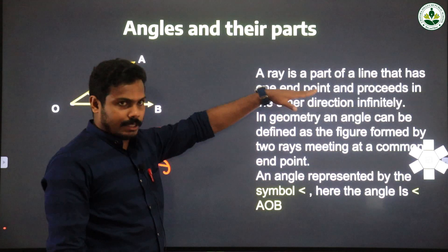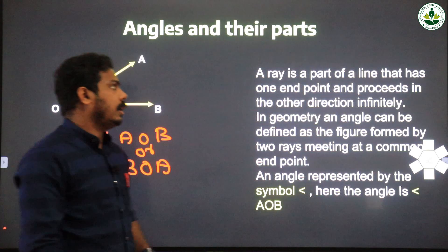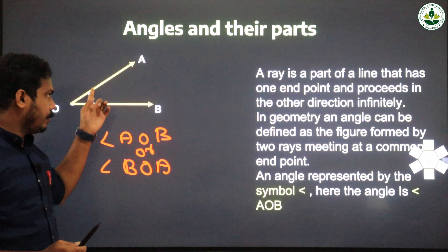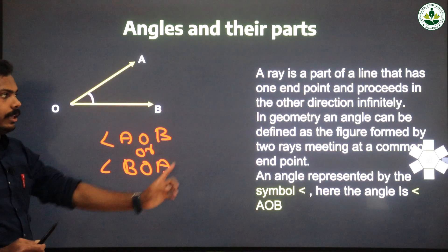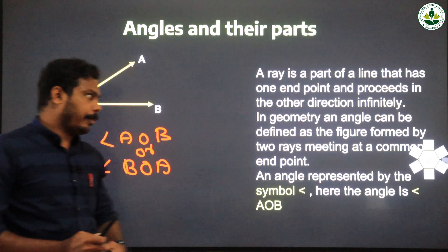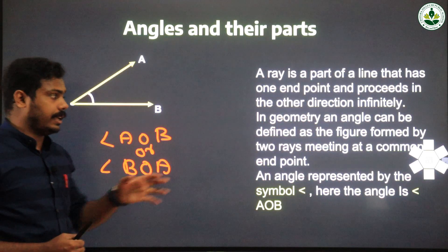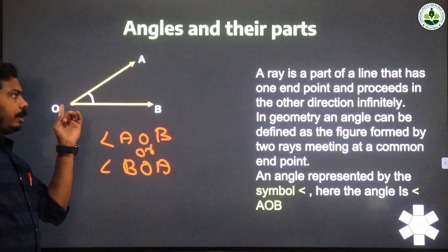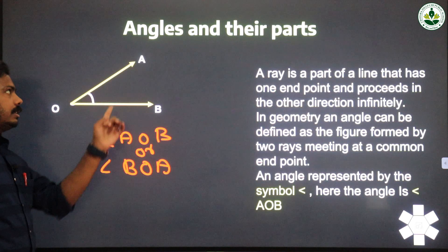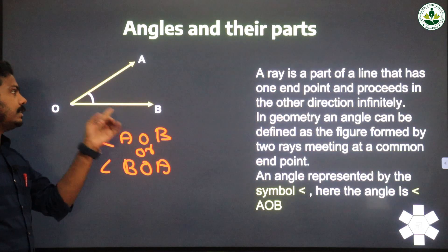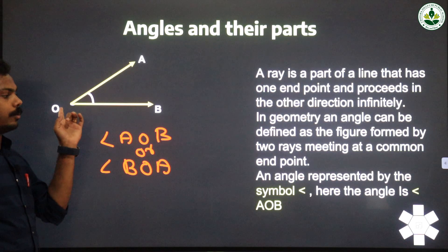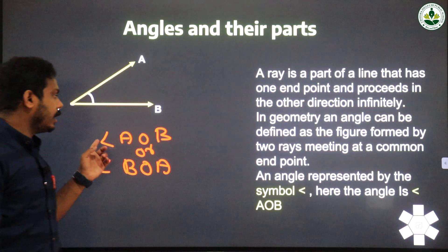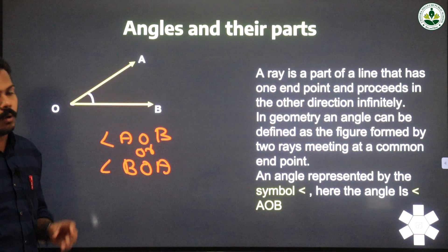A ray is a part of a line that has one endpoint and proceeds in the other direction infinitely. Here we can see two rays OA and OB. In geometry, an angle can be defined as the figure formed by two rays meeting at a common endpoint. Here the common endpoint is O, where the two rays intersect, making angle AOB or angle BOA.